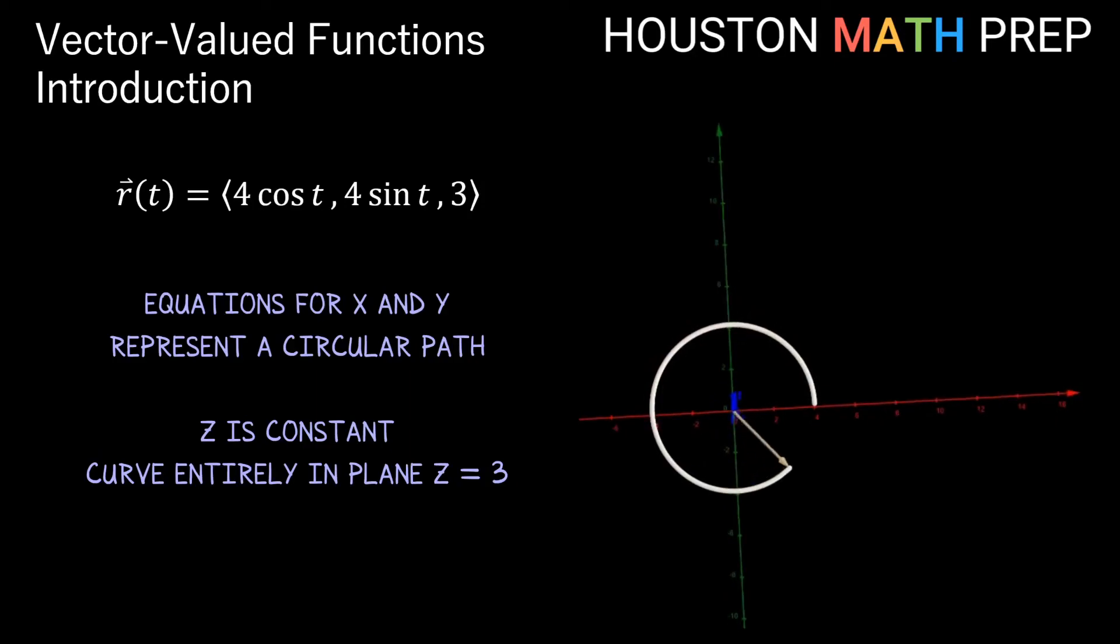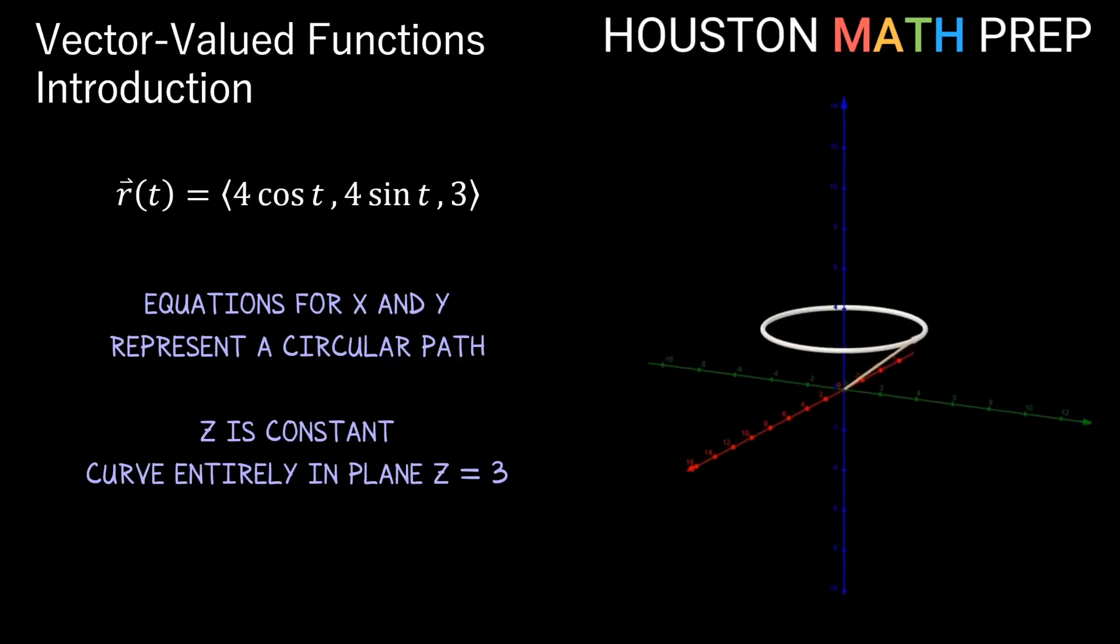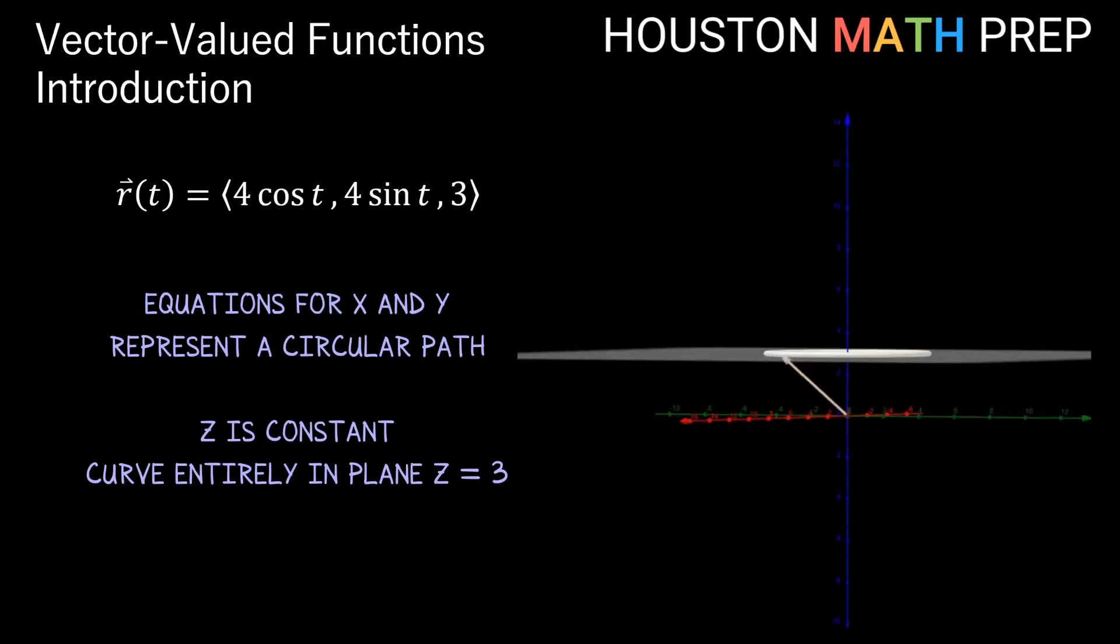So our vector-valued function defines a curve in space that is a circle of radius 4, but it lies completely within the plane z equals 3.